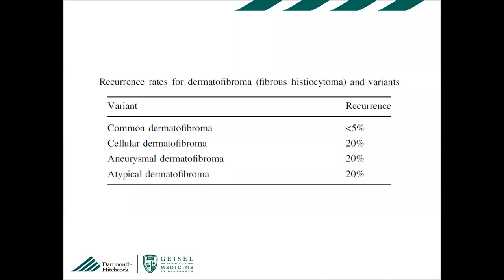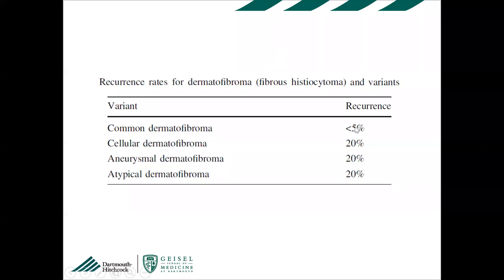The term fibrous histiocytoma was subsequently applied to benign and intermediate neoplasms, one of which is dermatofibroma seen in the skin and superficial soft tissue. However, the term is not accurate because these tumors don't come from histiocytes — they are mesenchymal in nature. So 'dermatofibroma' is a more appropriate designation; 'fibrous histiocytoma' is essentially meaningless.